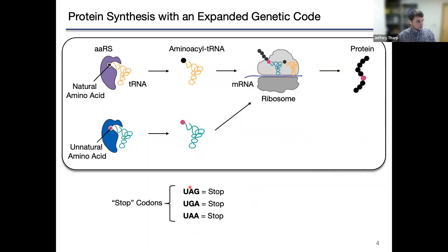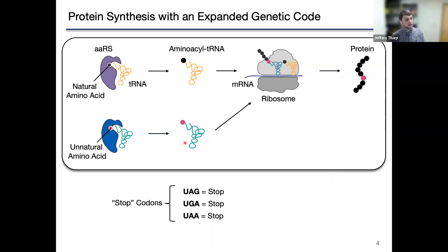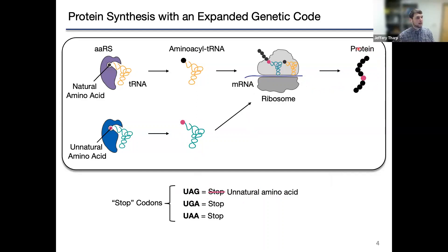This tRNA can install the amino acid into proteins during normal ribosomal protein synthesis. Typically this is done using tRNAs that recognize the UAG stop codon. UAG is one of three codons that don't normally encode an amino acid — instead, they tell the ribosome where to stop protein synthesis. By using tRNAs that can recognize UAG, we can effectively change the meaning of this codon from signaling stop to signaling incorporation of our unnatural amino acid, and by programming the position of UAG within a gene, we can program the position of the unnatural amino acid within the final protein.